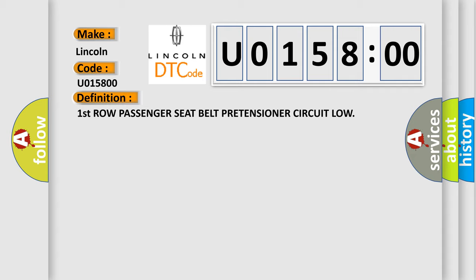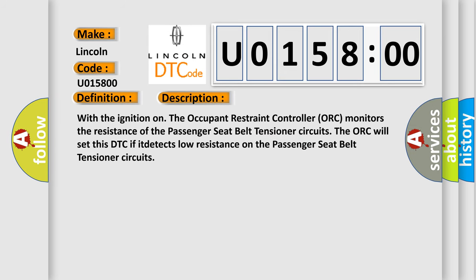And now this is a short description of this DTC code. With the ignition on, the occupant restraint controller (ORK) monitors the resistance of the passenger seatbelt tensioner circuits. The ORK will set this DTC if it detects low resistance on the passenger seatbelt tensioner circuits.